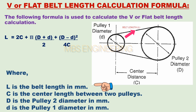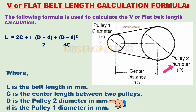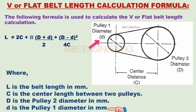Where L is the belt length in mm, C is the center length between two pulleys, capital D is the pulley 2 diameter in mm, and small d is the pulley 1 diameter in mm.